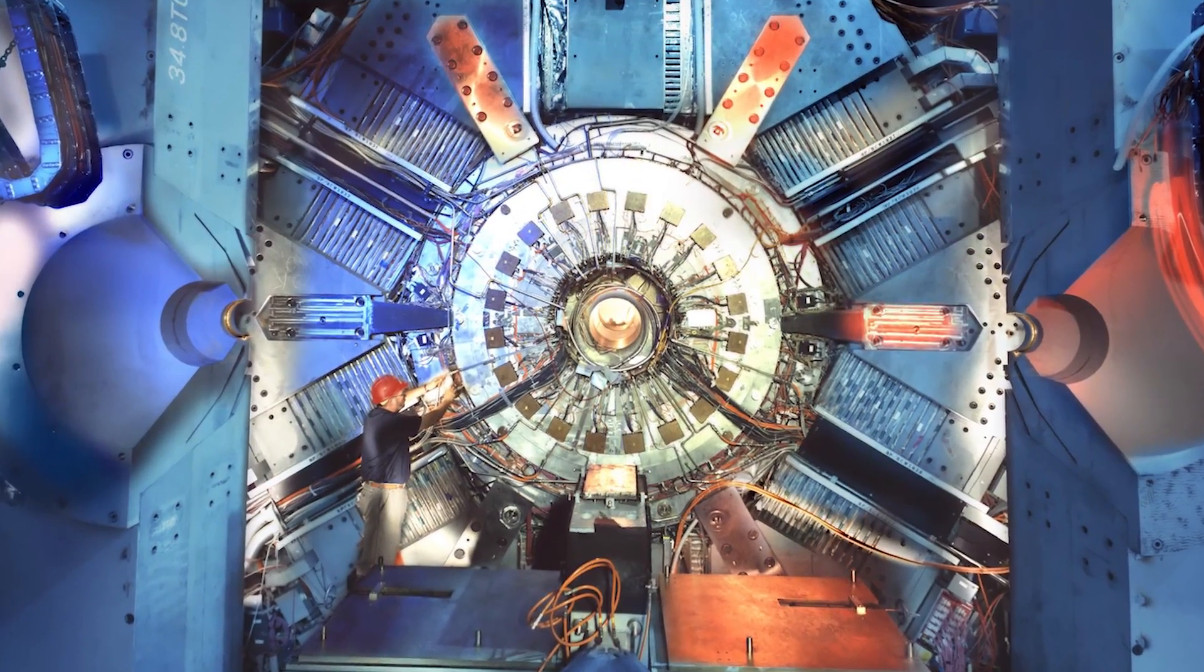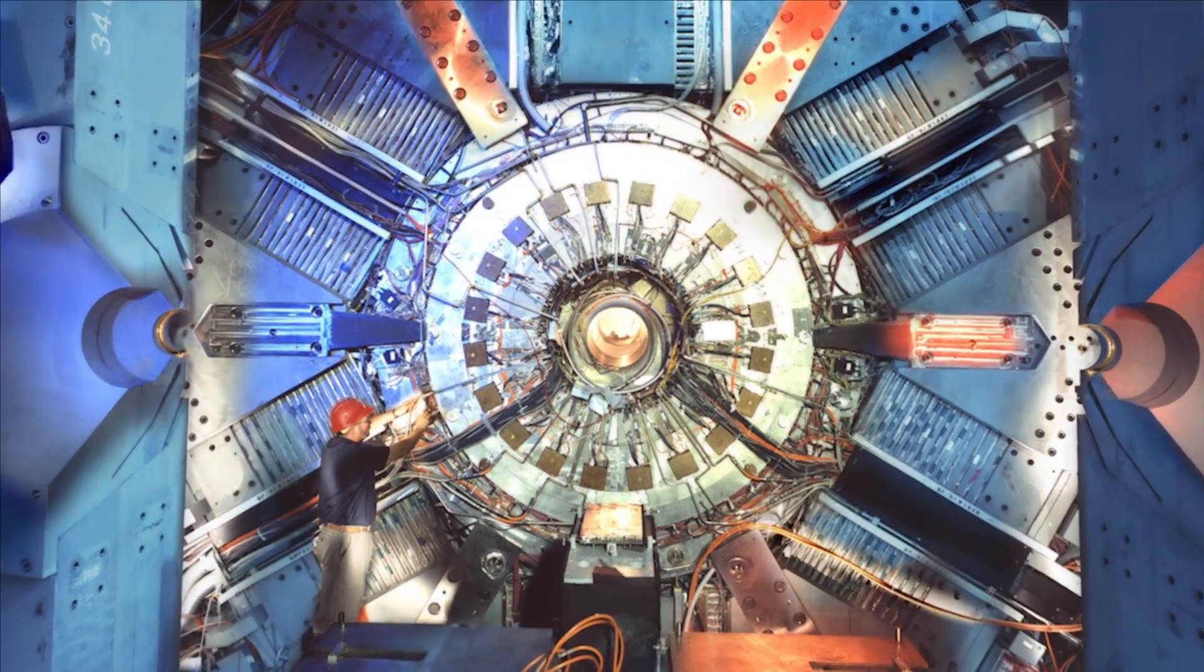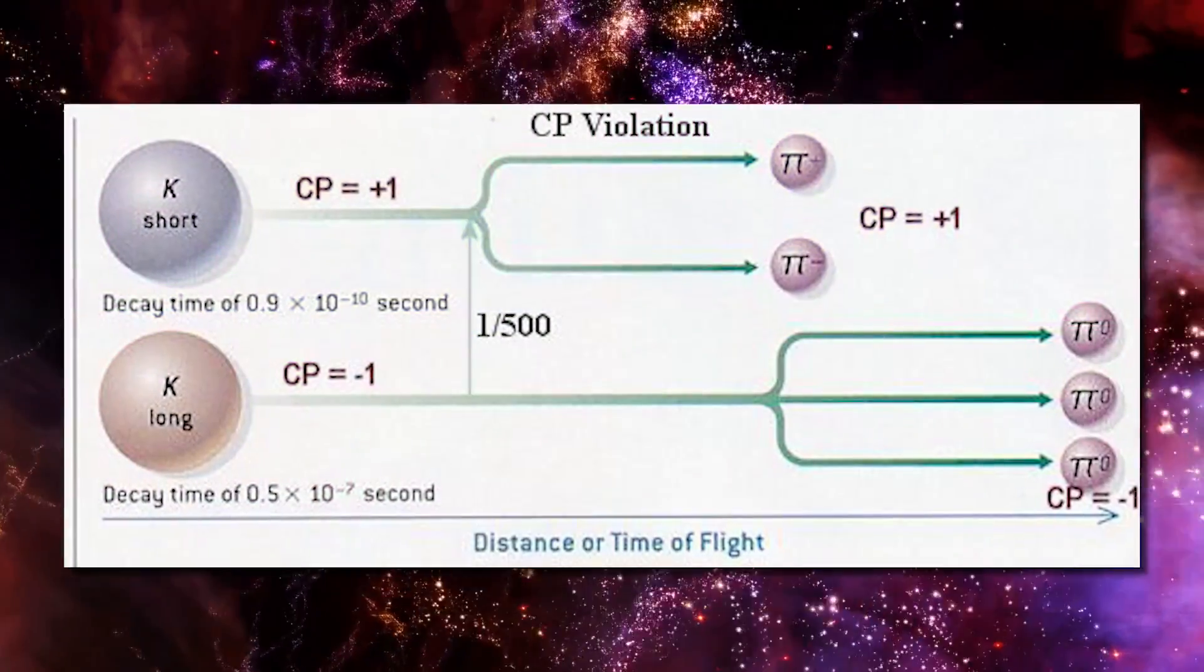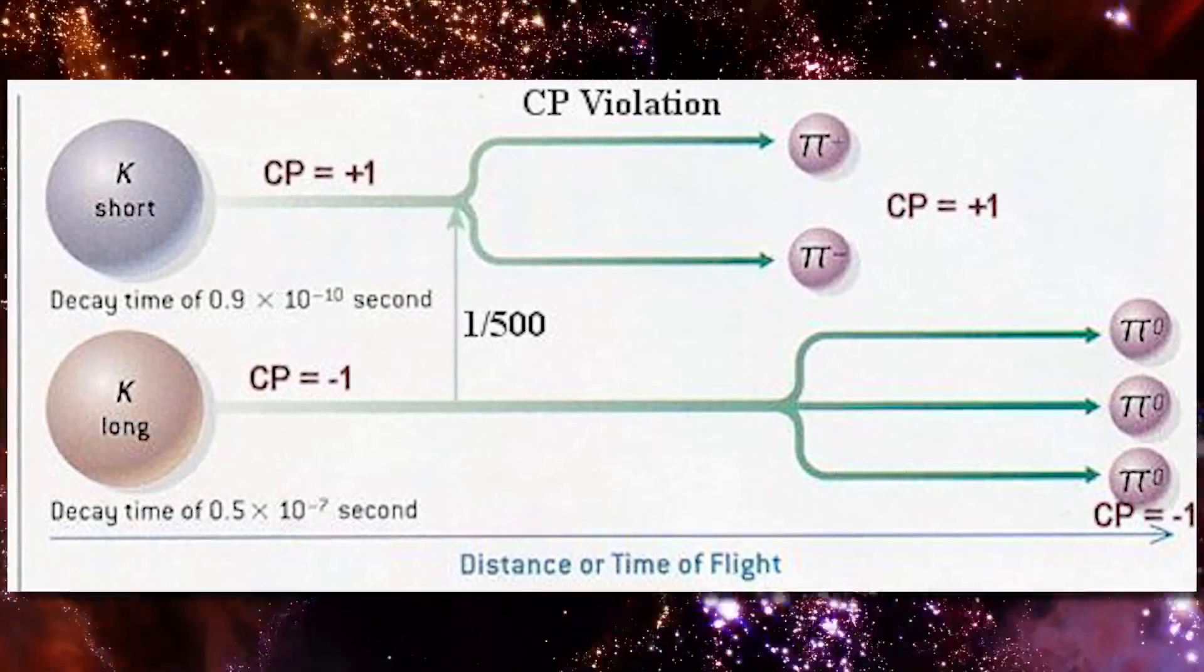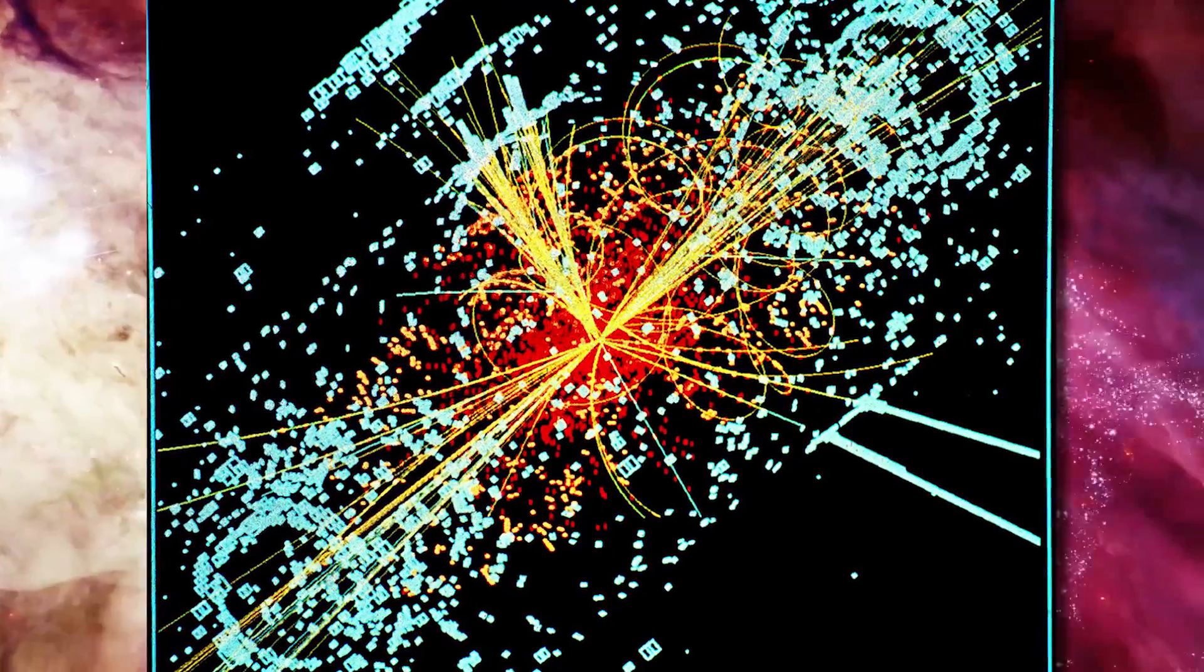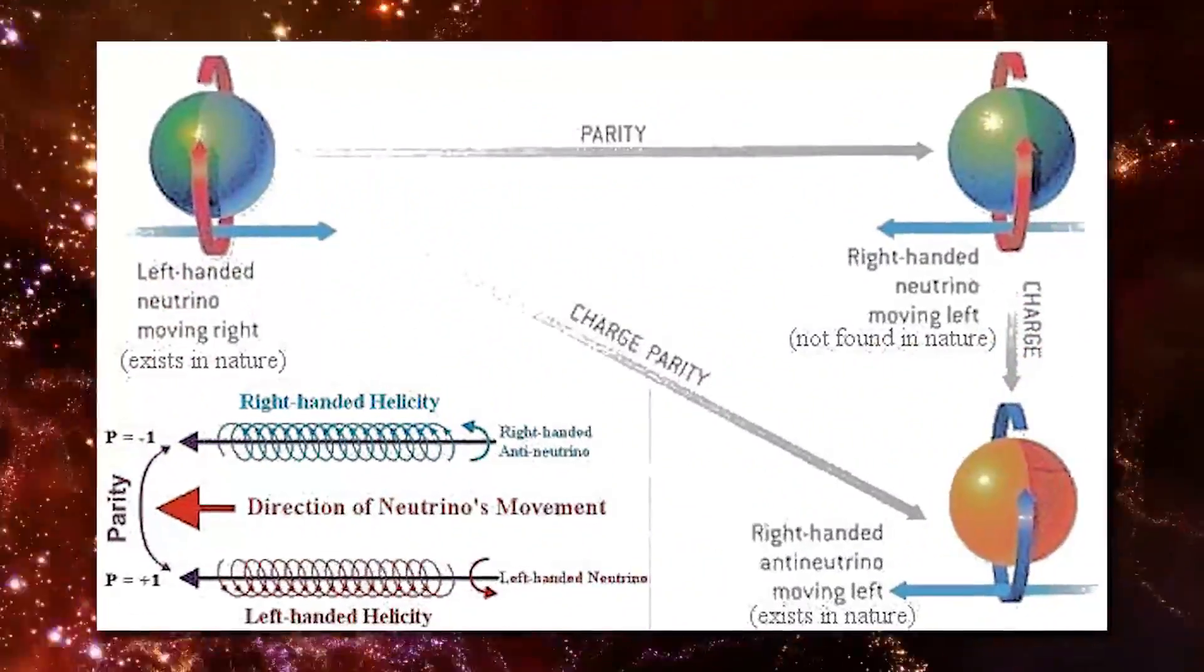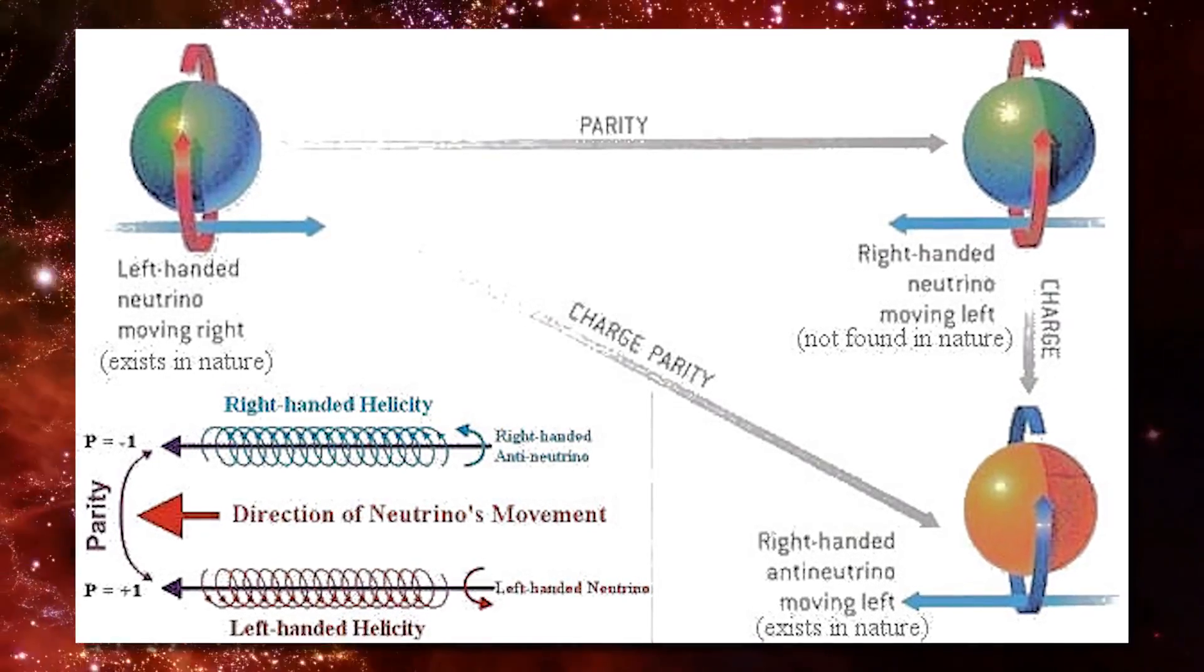The third prong needed to understand the matter-antimatter asymmetry is the so-called CP violation. The laws of physics, including conservation laws, should be the same if you were to change the signs of the charges of all the particles involved in a reaction and look at the reaction through a mirror. CP violation occurs when the outcomes of a reaction change upon inverting the sign of the charges and taking the mirror image of the reaction. CP violation is needed to produce more particles than antiparticles in the very early universe.